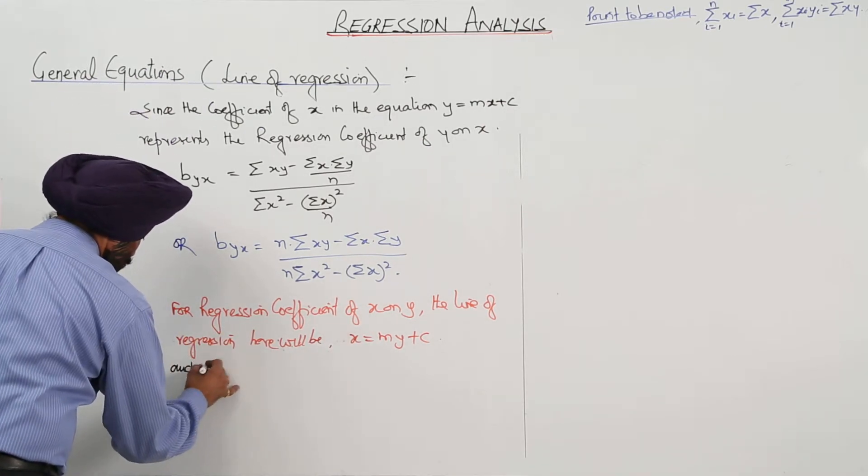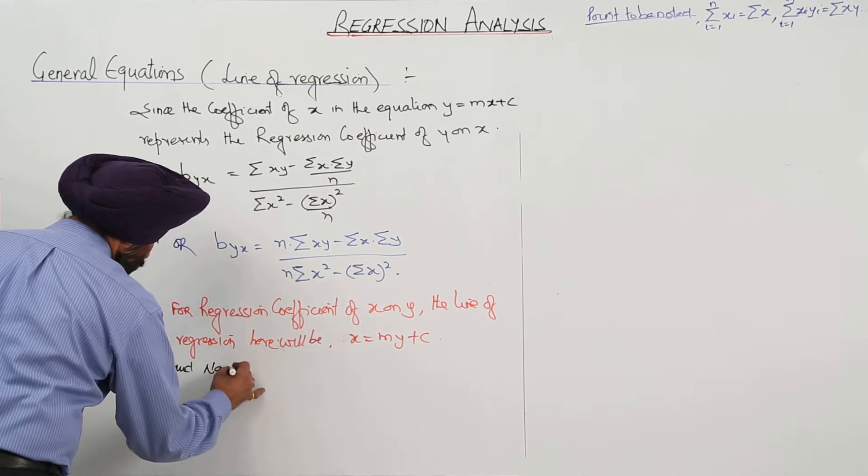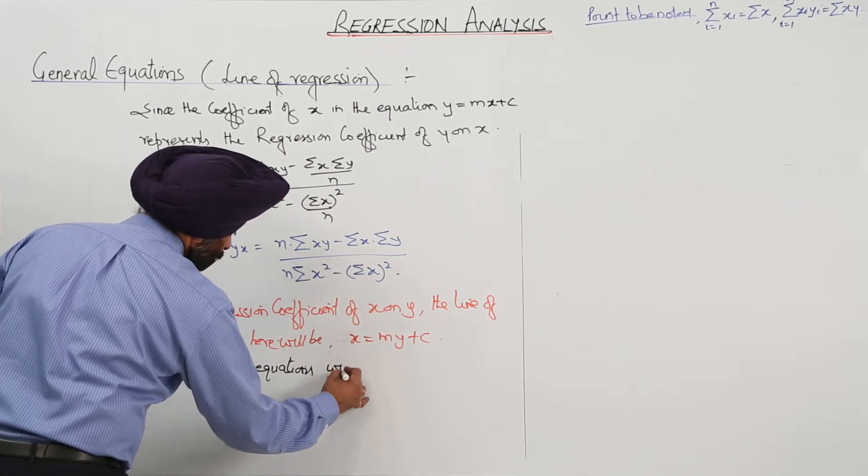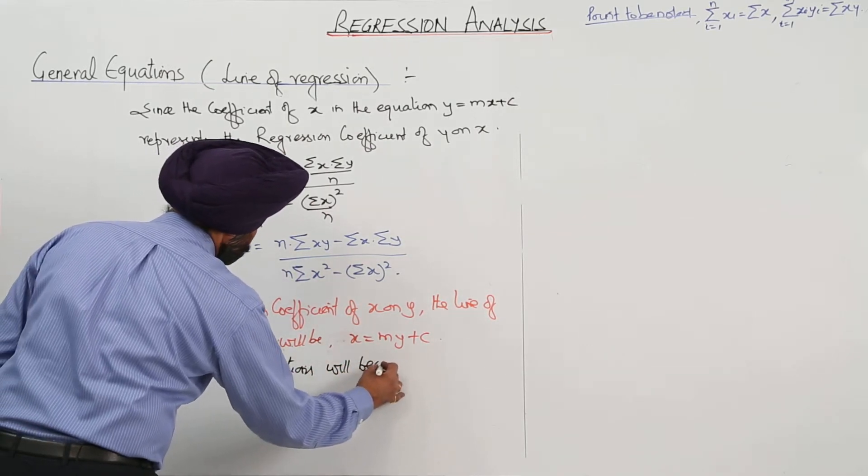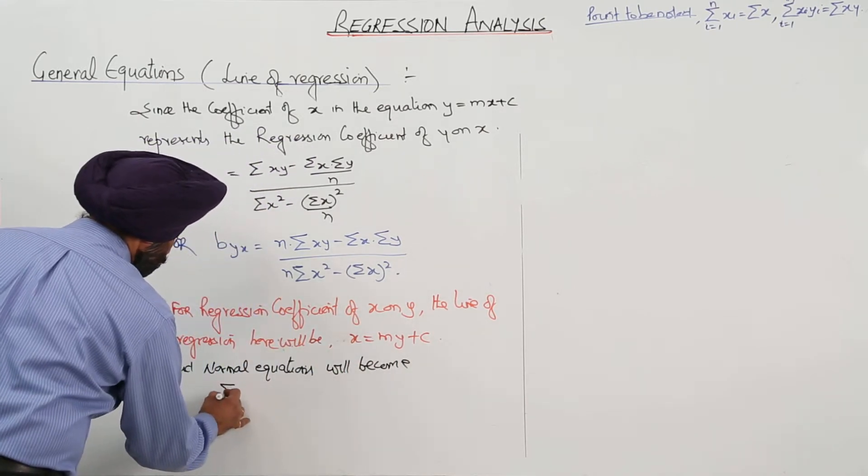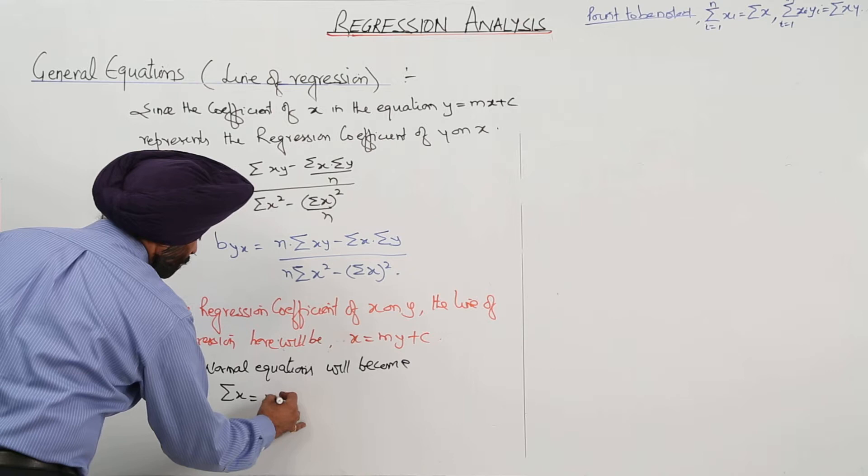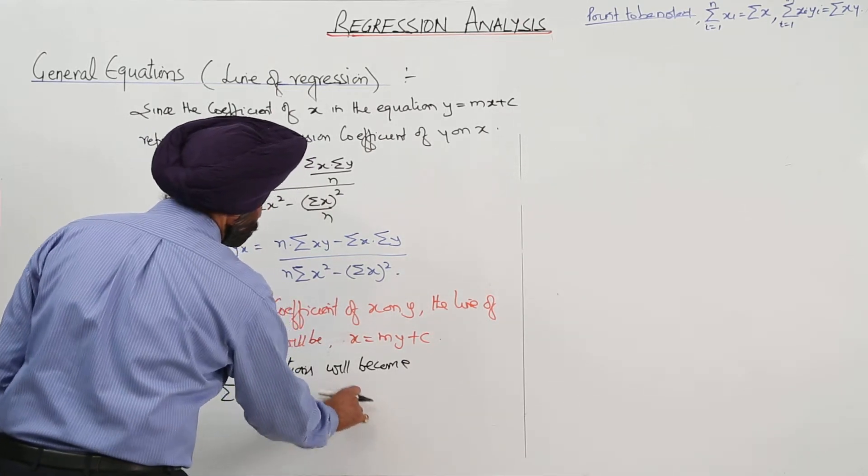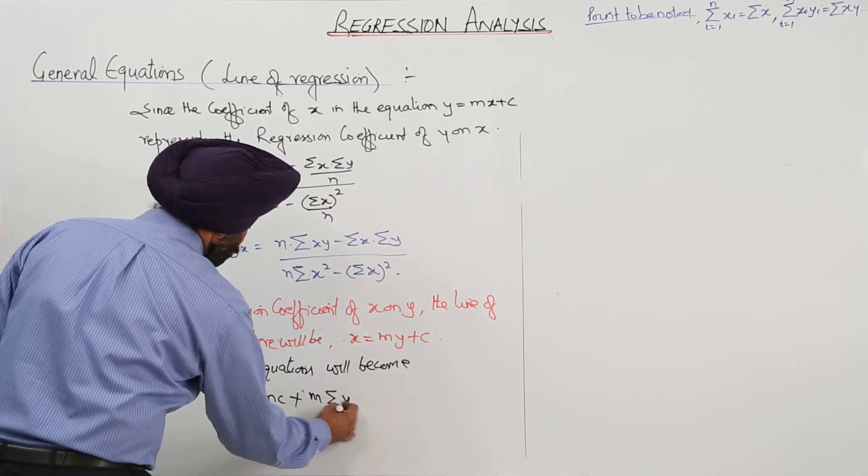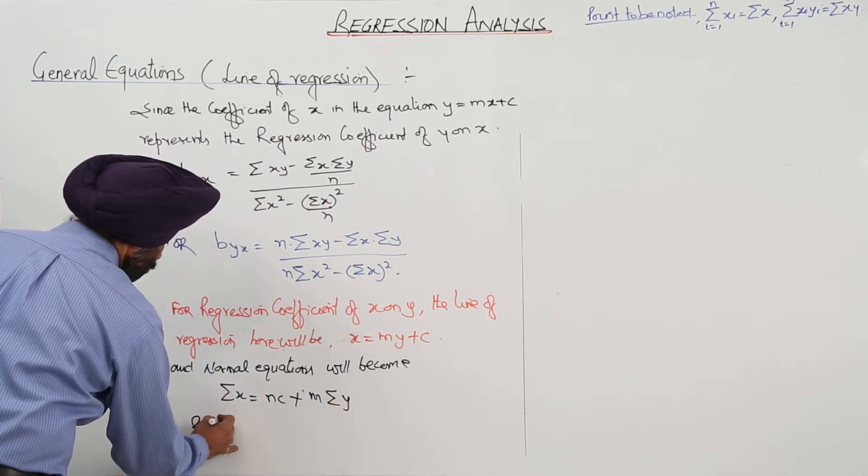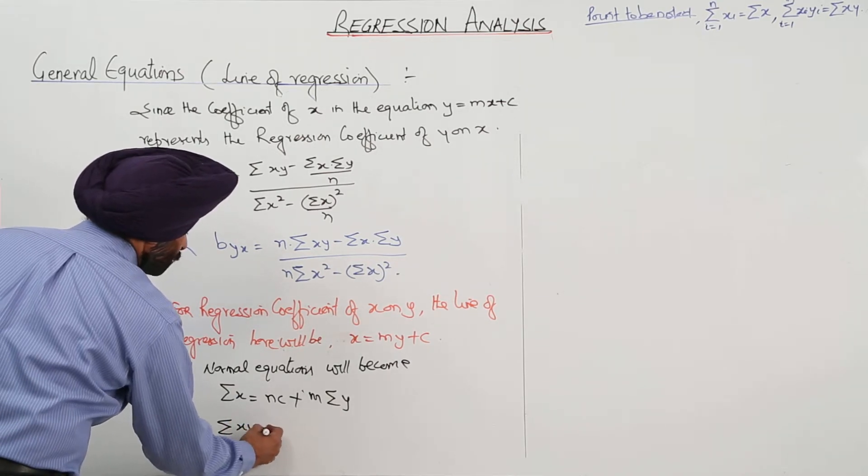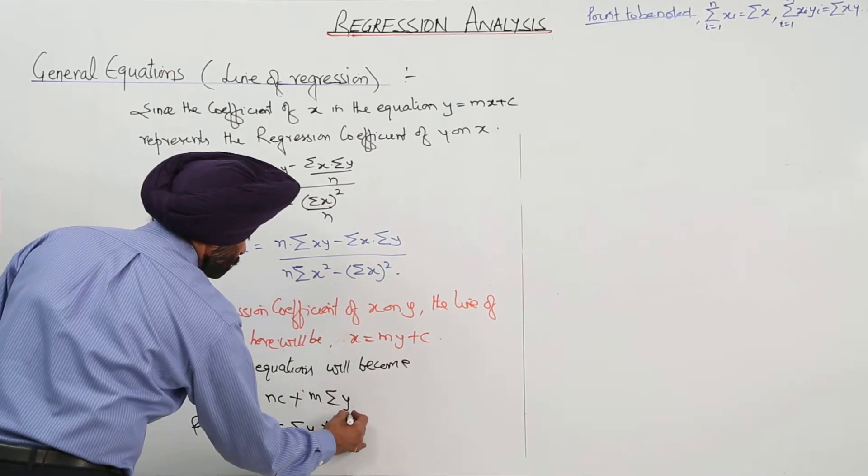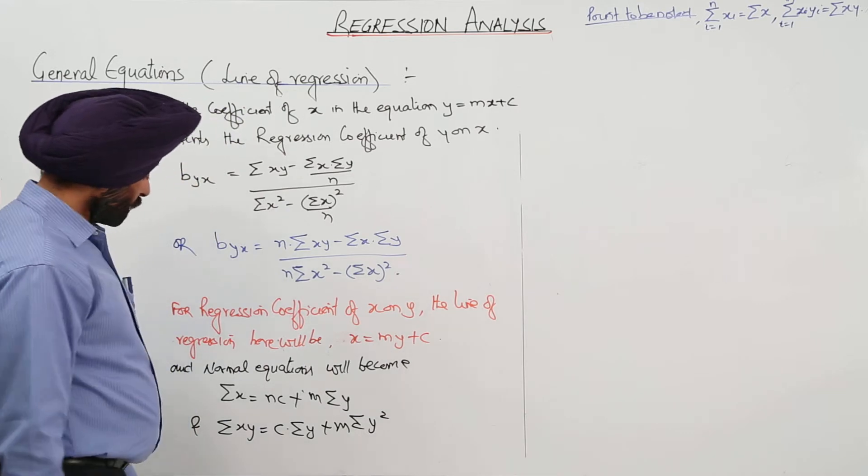And the normal equations, and normal equations will become here: summation of x equals n c plus m summation of y, and summation of x y equals c summation of y plus m summation of y square.